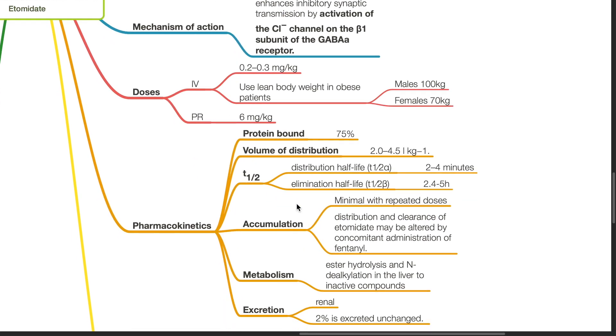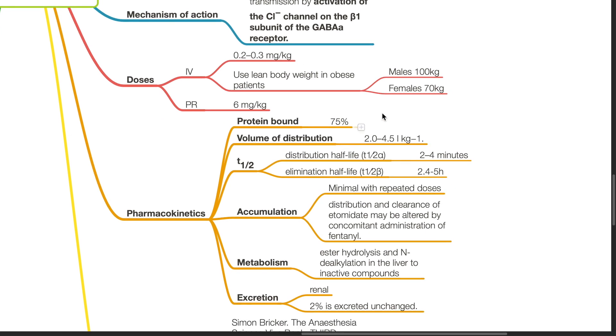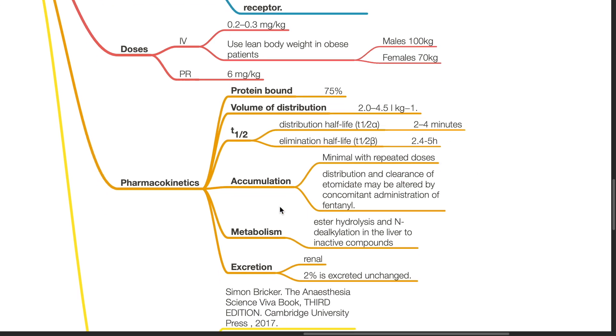Pharmacokinetics of etomidate: It is 75% protein bound and has a volume of distribution of 2 to 4.5 liters per kg. The distribution half-life is 2 to 4 minutes and elimination half-life is 2.4 to 5 hours. Accumulation is minimal with repeated doses. Distribution and clearance of etomidate may be altered by concomitant administration of fentanyl. Etomidate is metabolized by ester hydrolysis and N-dealkylation in the liver to inactive compounds and is excreted renally. 2% is excreted unchanged.